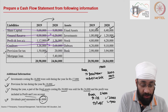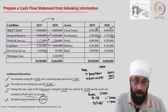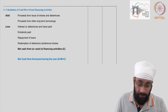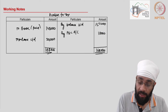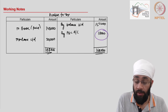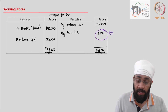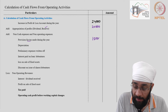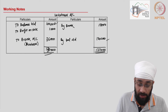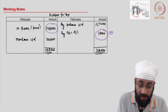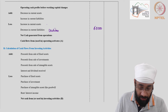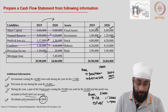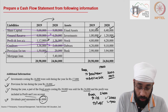That is provision for tax. We have prepared an account for provision for tax, so we go to that account. From this account we know the provision created during the year — 18,000 to be added back to operating activities, because this is not the actual payment. The actual payment of tax is 148,000.